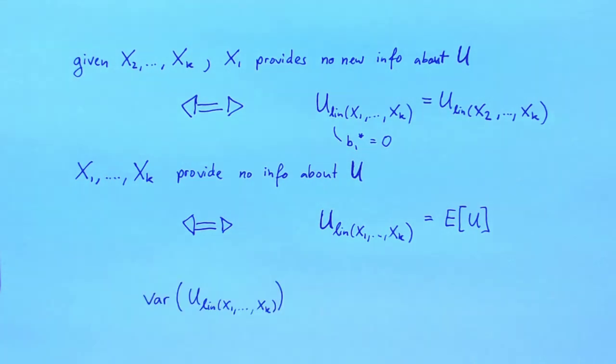The variance of the best linear prediction is, like any other variance, positive. It can be shown that this variance is always smaller or equal than the variance of u.